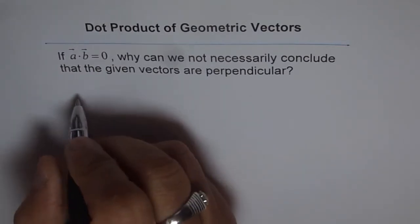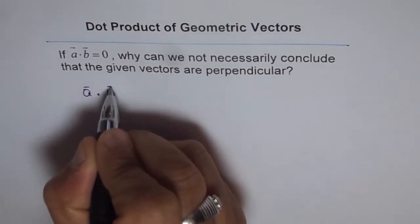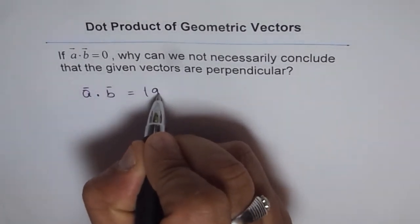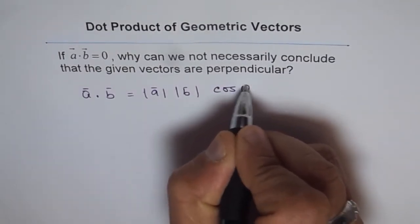So what the question is trying to say here is this. The vector A dot vector B is actually equals to magnitude of A times magnitude of B times cos of theta.